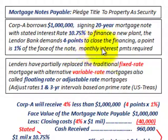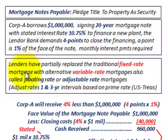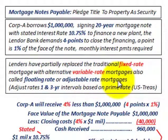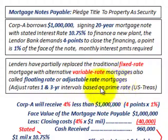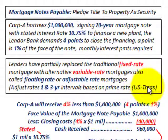Also required are monthly interest payments on this note. Lenders have largely replaced the traditional fixed rate mortgage with alternative variable rate mortgages, also called floating rate or adjustable rate mortgages. They adjust the rates in increments — one and three-year increments — based on the prime interest rate, or it could be U.S. Treasury notes or bonds.